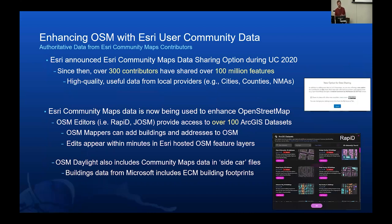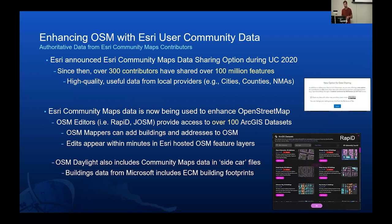Esri has for years had a program called Community Maps, which lets our customers share their data with us so we can include it in our proprietary Esri base maps — topographic, streets, and commonly used ones. Three years ago at our user conference, we added a new data sharing option: a checkbox that says 'share my data with other map providers,' which gives us permission to reshare their data with OpenStreetMap. Since then, we've had over 300 customers opt into that sharing, and they've shared over 100 million features with us. That data is now actively being used through this integration in Rapid to improve OpenStreetMap.